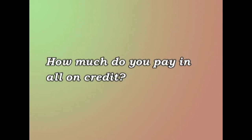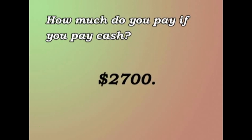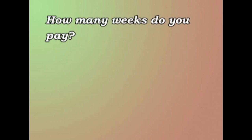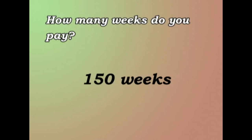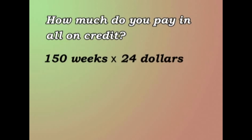Let's work it out together. How much do you pay if you pay cash? $2,700. How much do you pay a week on credit? $24. How many weeks do you pay? 150 weeks. So how much do you pay all in all on credit? 150 weeks times $24 makes $3,600.